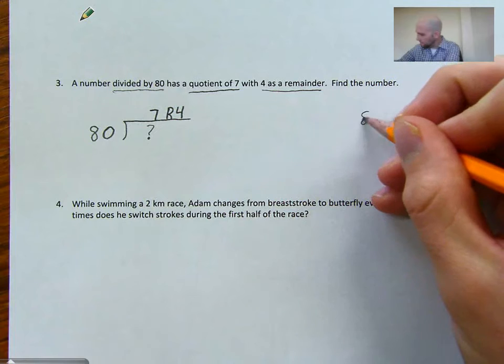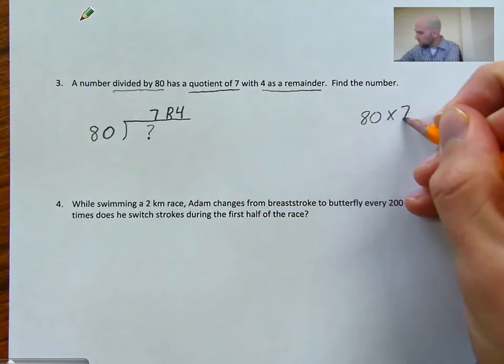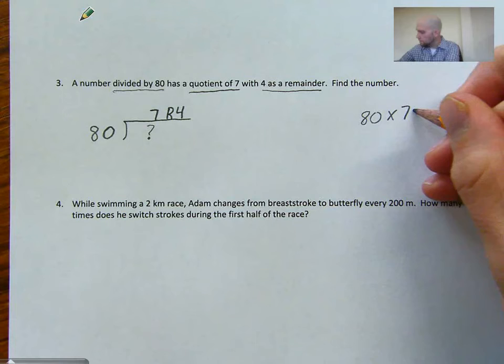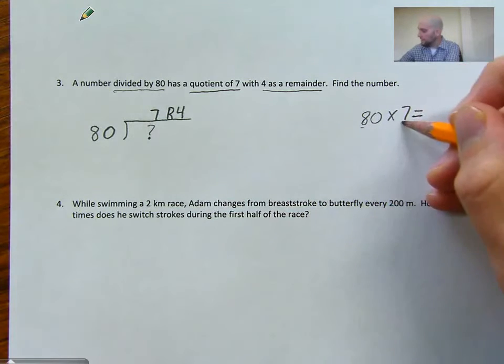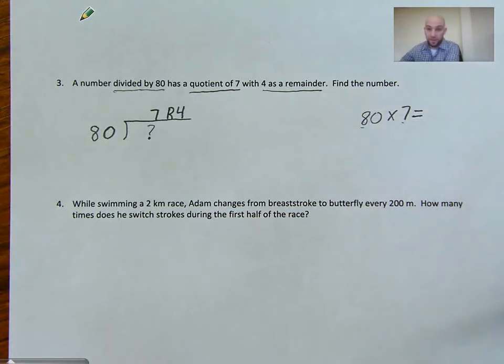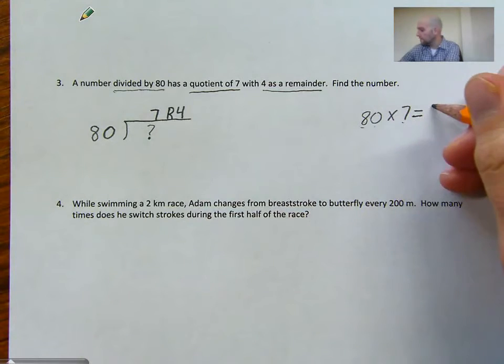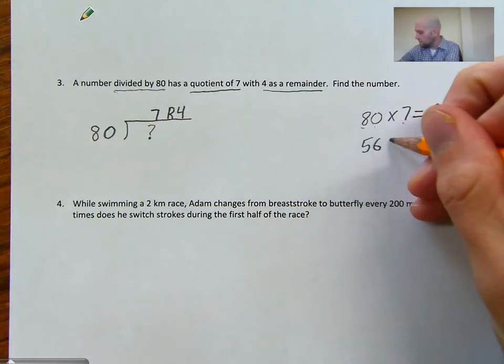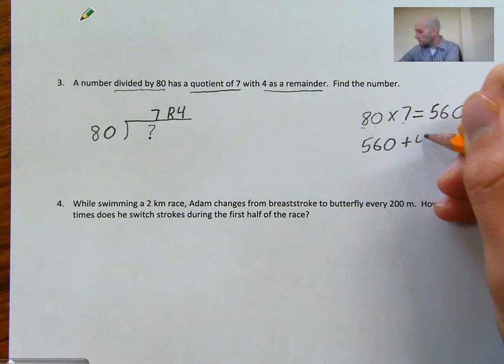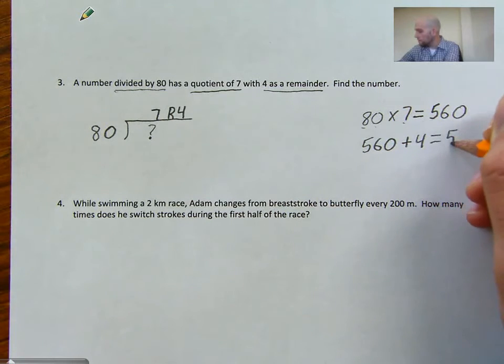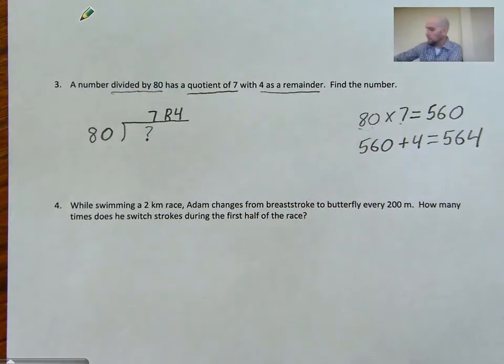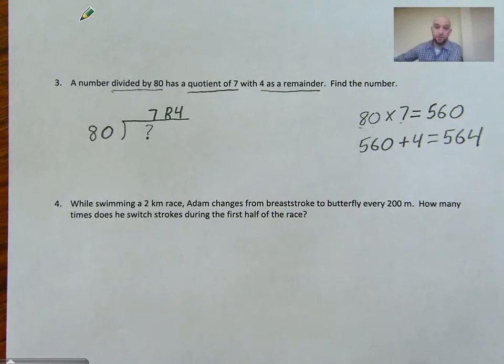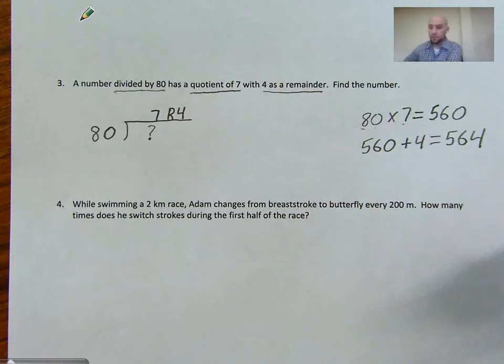We'll do 80 times 7. And I would just look at 8 times 7. 8 times 7 is 56 times 10 is 560. And then 560 plus 4 is 564.